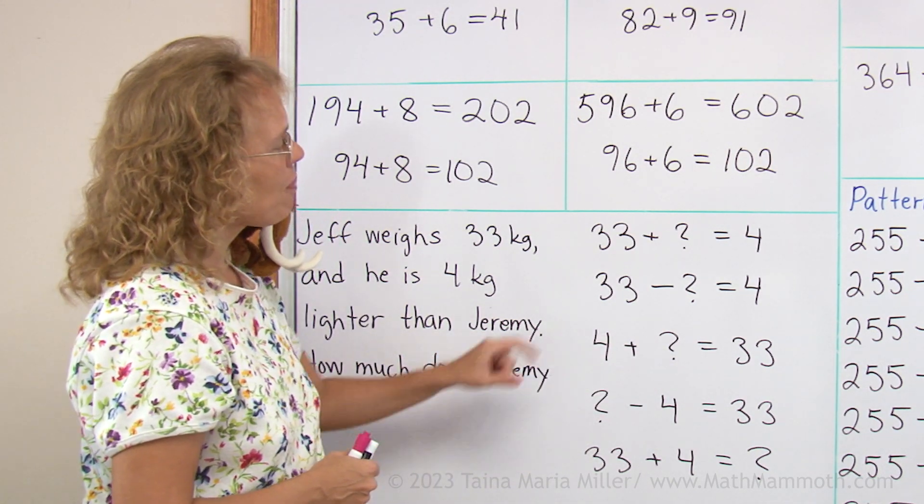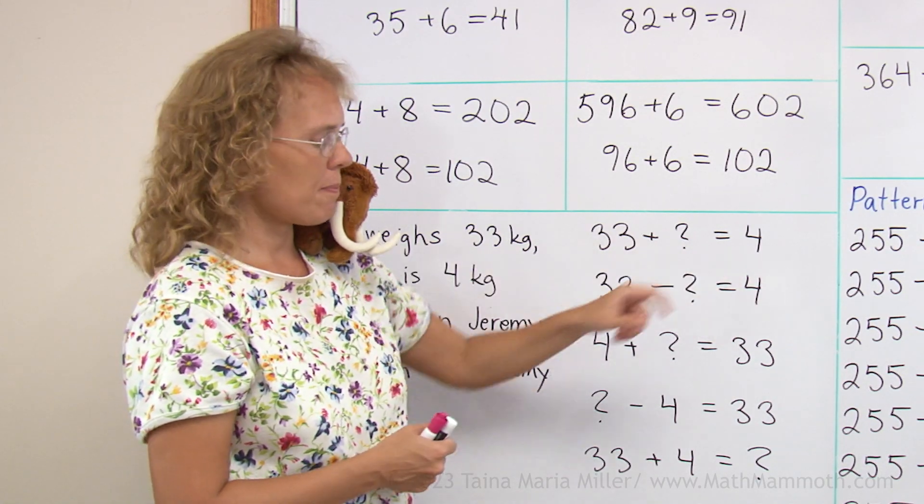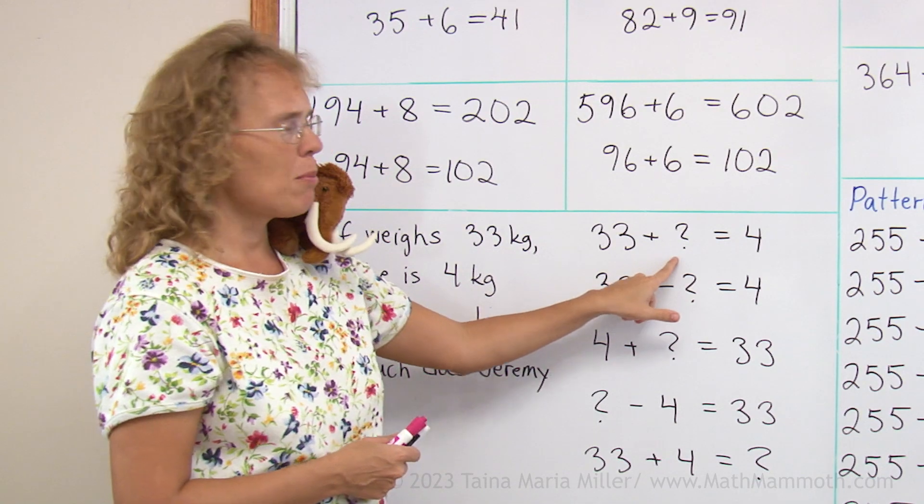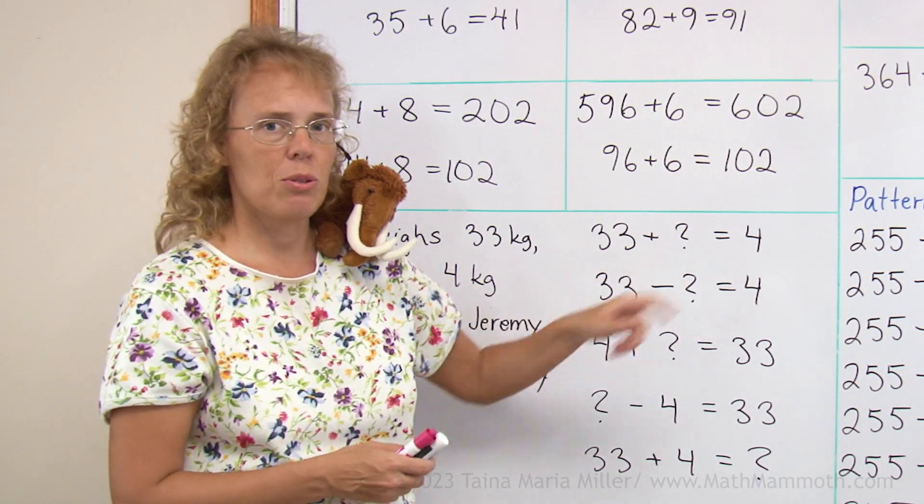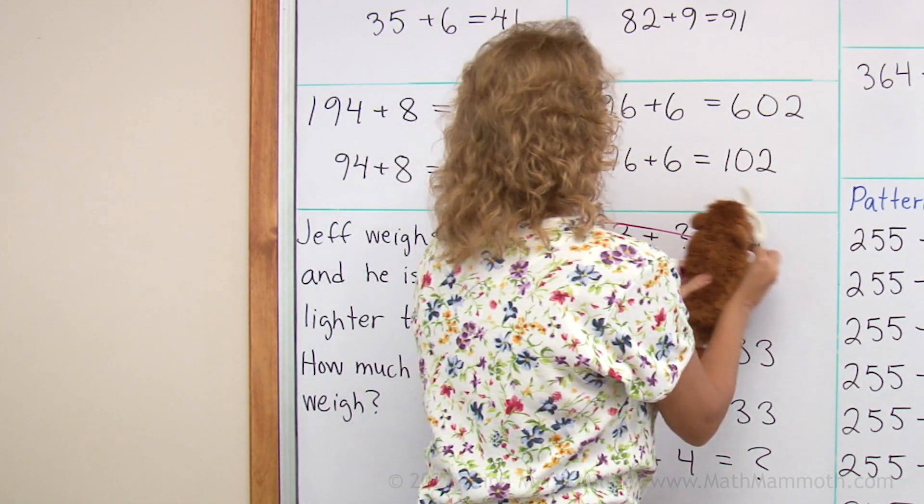So let's see, 33 plus some number equals 4. Now if you add 33 and any number, it will be more than 33, you can't get 4 as an answer. Cross that out, okay? It can't be that.